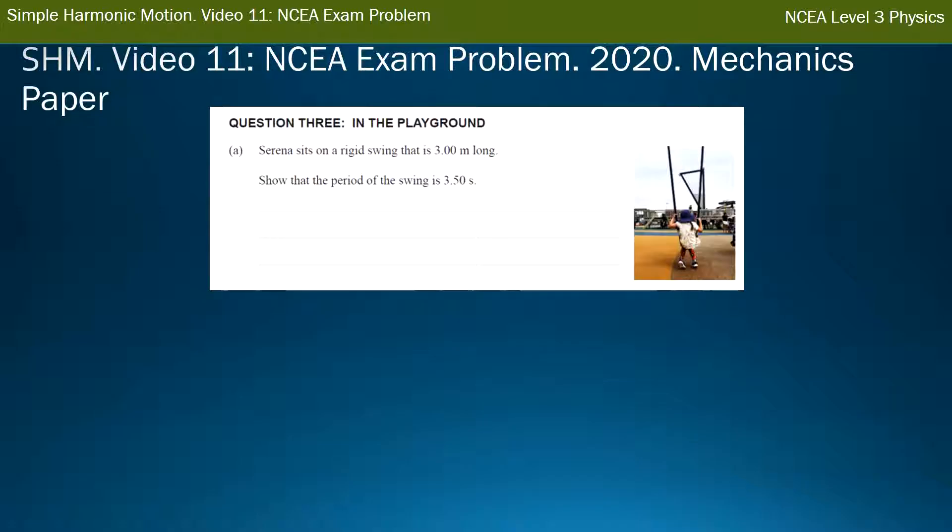So it starts off and we have Serena sitting on a swing in the playground. It's three meters long. This makes me think of a pendulum and they ask me to show that the period of the swing is 3.5 seconds. So whenever I'm asked a show question, they're basically saying, what is the period of the swing? But I'm going to tell you the answer is 3.5 seconds. Hopefully you get that as well. You can't actually use 3.5 when you're working. You can only show that you can get to 3.5 at the end. So a pendulum has, on our formula sheet, a time period of 2 pi root L over g. Just put the numbers in. L being 3, g being 9.81, and that spits out 3.50 seconds. So I showed it, clearly showed it, and the mark would give me full marks for that. That would be an achieved question.